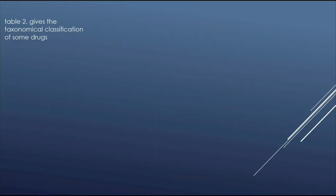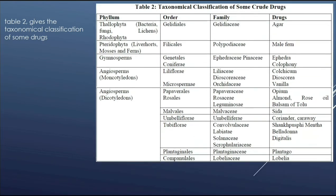Now we will discuss the taxonomical classification of some crude drugs, arranging them in hierarchical order from phylum or kingdom to order, family, and then the drug. Phylum thalophyta contains bacteria, fungi, algae, and lichens. In that, class rhodophyta, order gelidiales, family gelidaceae — the drug present is agar. The next group under thalophyta contains liverworts, hornworts, mosses, and ferns. In that, order filicales, family polypodiaceae — the drug present is male fern.